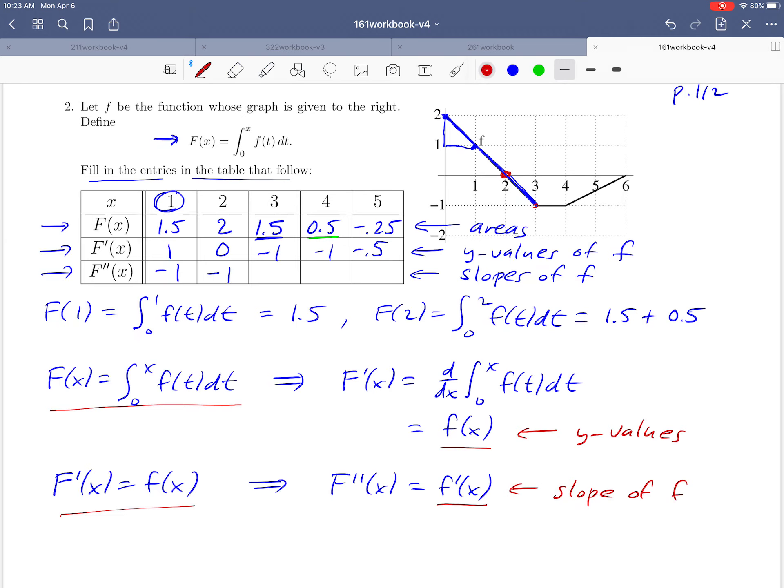At x=3, we have a sharp corner or cusp. At such points, the derivative doesn't exist, so F''(3) doesn't exist (DNE). Similarly, x=4 is also a sharp corner, so F''(4) also does not exist.